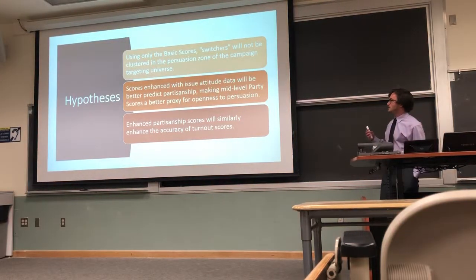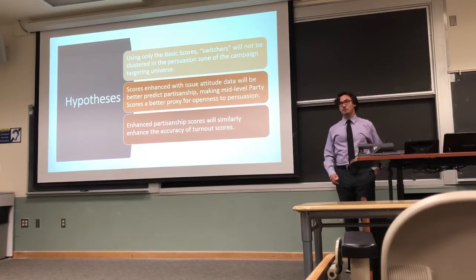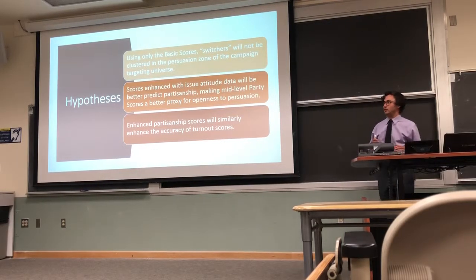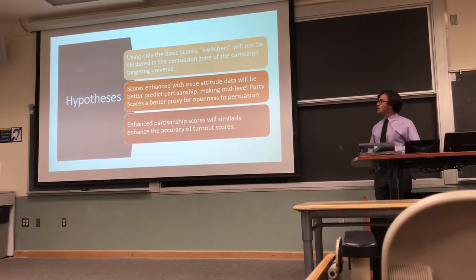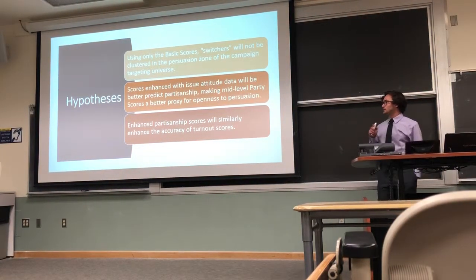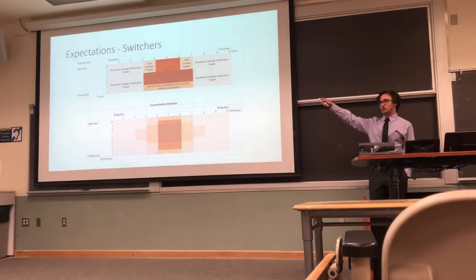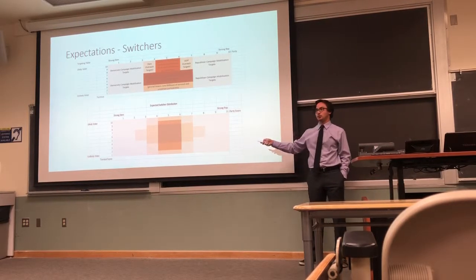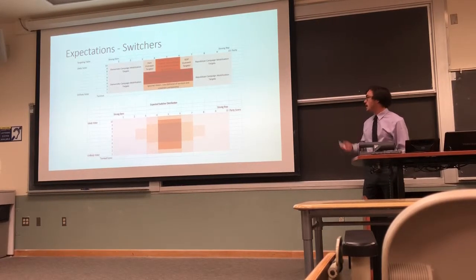My first hypothesis is that using only the basic scores, we're not going to do a good job predicting who is persuadable by finding them in the persuasion zone of the voter universe. My second hypothesis is that using the enhanced scores will improve that partisanship prediction and be a better proxy because we're incorporating all those individual-level issue attitudes. If the logic of the targeting universe holds, you would expect switchers to be densely clustered right in the middle of the persuasion universe.